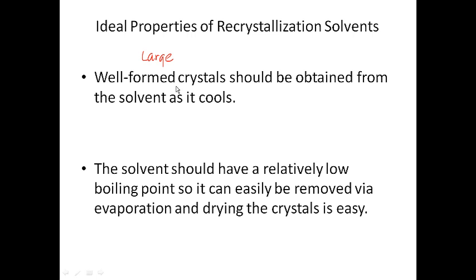We want well-formed, large crystals because they're easier to filter, which helps avoid losing product — either by crystals running through the filter paper or sticking to the container walls where they're hard to see. The final property of a good recrystallization solvent is that it should have a relatively low boiling point, so we can easily remove it by evaporation. We evaporate the solvent by suction filtration — blowing air over the crystals — or by placing them on a watch glass or aluminum dish in an oven.